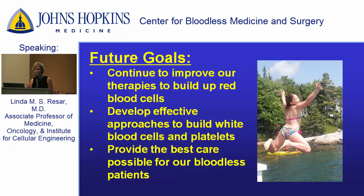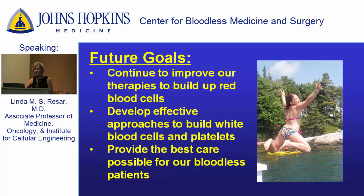We're also starting to look at approaches to build other parts of our blood. We've talked about anemia, but we all have white blood cells — they help us fight infection — and platelets, which help clot our blood when we get cuts or have surgeries. How can we build those? We're getting an increasing population of patients who have cancer and need chemotherapy, and unfortunately many side effects of chemotherapy block blood production in our bone marrow. We're going to be using factors similar to EPO, but in this case to build white cells and platelets. In the laboratory, we're looking at new ways to treat cancer that won't affect the blood cells.